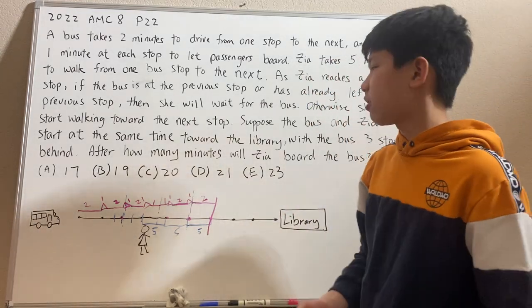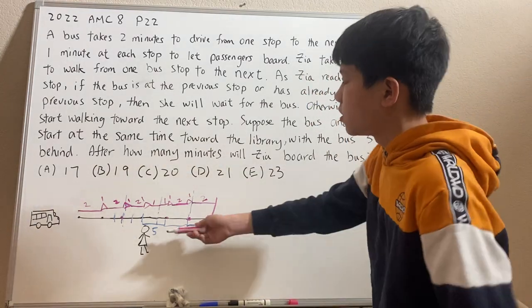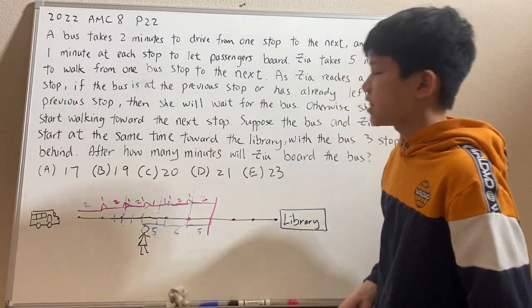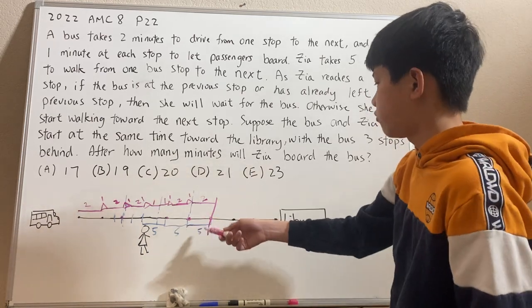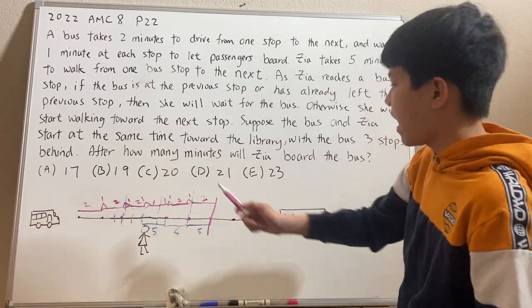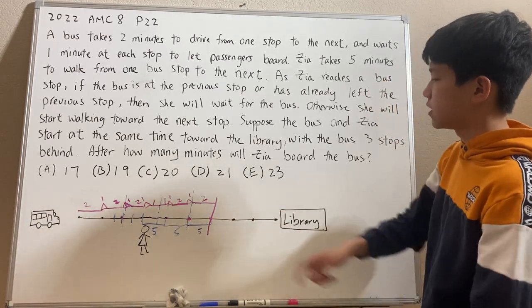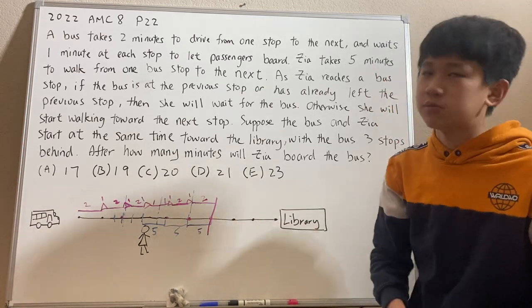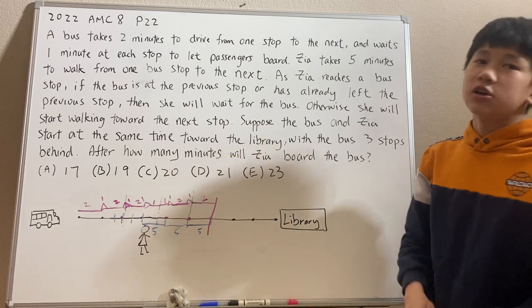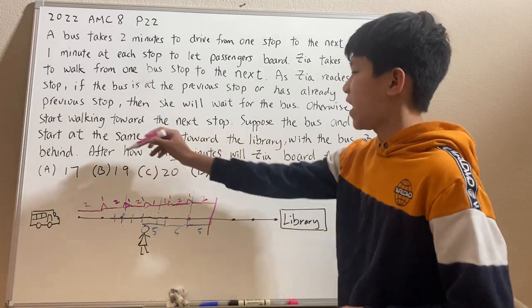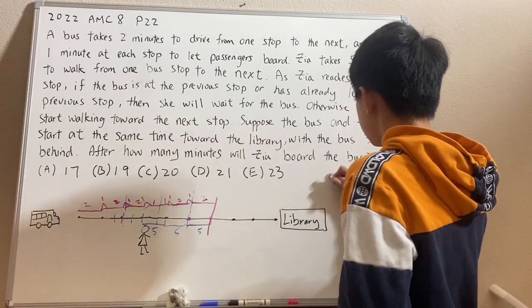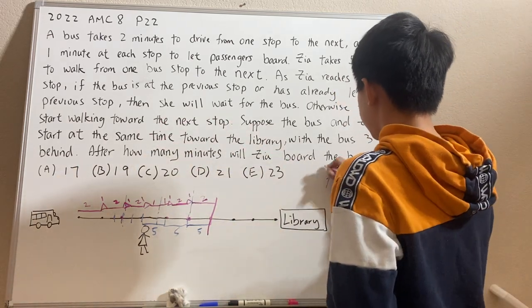A fast way to count this would be to count Zia's five-minute intervals — 5, 10, 15 — and then just add the two minutes, because Zia waits an extra two minutes at the end. Both ways lead to the final answer of A, 17. So that is our final answer.